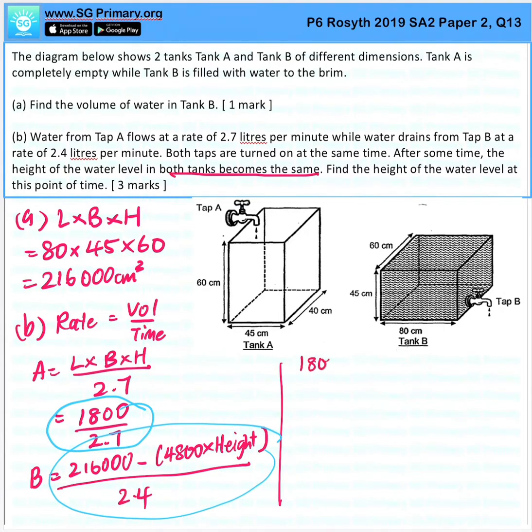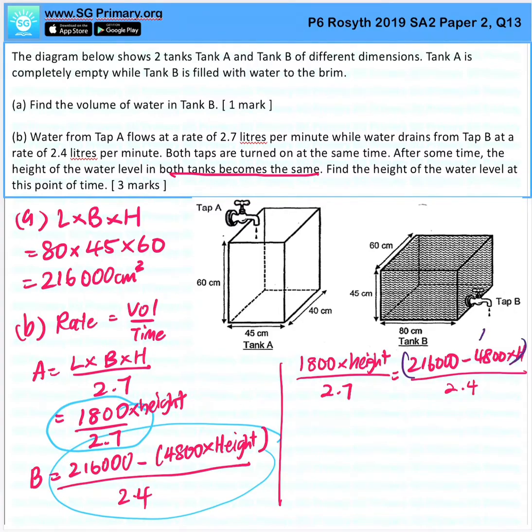1800 times height over 2.7 equals 216000 minus 4800 times height over 2.4. Now, in order to get this to just one singular equation without any fraction, multiply this one by 2.7 and this one by 2.4.